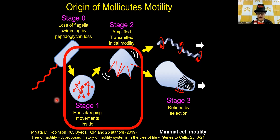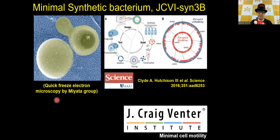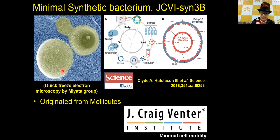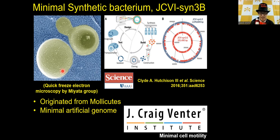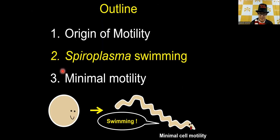We focused on this stage and wanted to reconstitute this system in a lab. We focused on the minimal synthetic bacterium JCVI-syn3, published by the J. Craig Venter Institute, which is famous for genome science. JCVI-syn3 originated from mollicute bacteria and has a minimal, artificial genome — artificially designed by computer and chemically synthesized. We can do genome manipulation, and of course it has no motility.